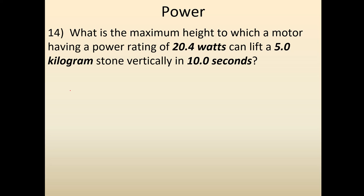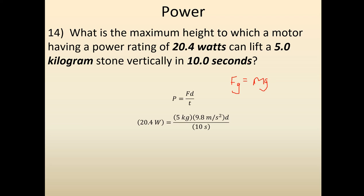Here's the next question — pause and work it yourself. This is essentially the same question, except instead of giving us the weight of the object, we're given the mass. So we're still using the same equation, except this time we have to calculate the force using Fg equals mg. Remember, if you're given the mass of something, we can automatically find the force. The mass is 5, so the force is going to be 50. Weight and mass are two different things. Once we do that and plug the numbers in, we get a maximum height of 4.16 meters.